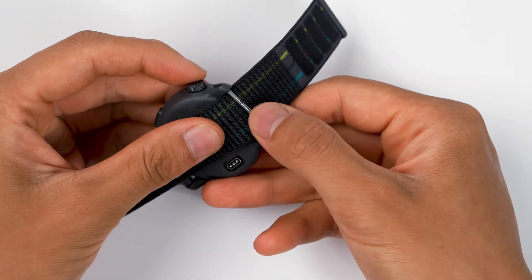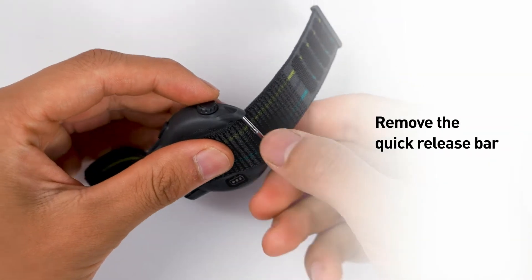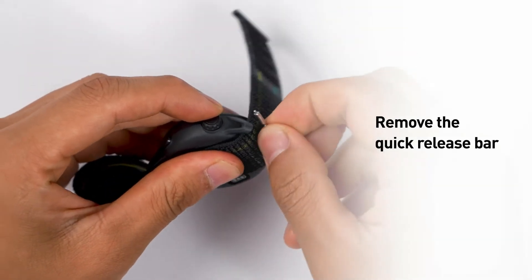To remove the quick-release bar, press down on the lever with your fingernail until it is fully compressed. The other end of the bar will then naturally release.